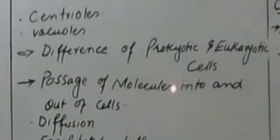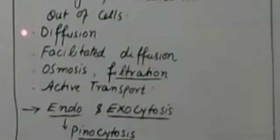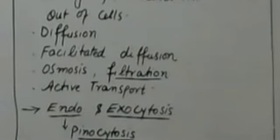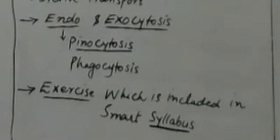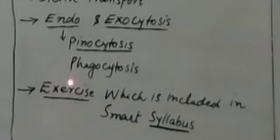After that, the passage of molecules into and out of the cell — how molecules enter the cell and exit by the process of diffusion. This includes its definition, examples, facilitated diffusion, osmosis, filtration, active transport, endocytosis, and exocytosis. In endocytosis, two definitions are important: pinocytosis is cellular drinking, and phagocytosis is cellular eating.